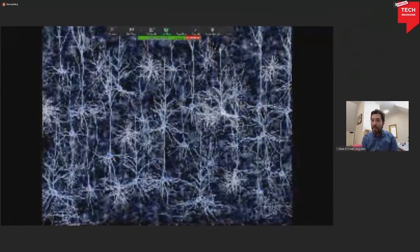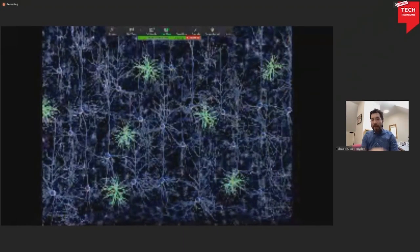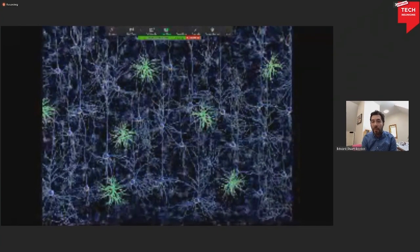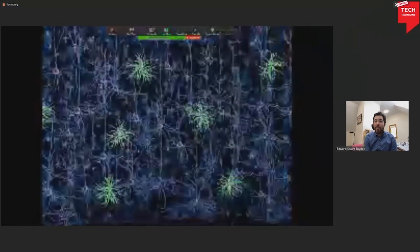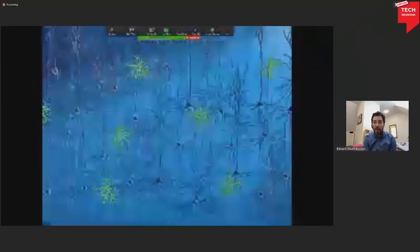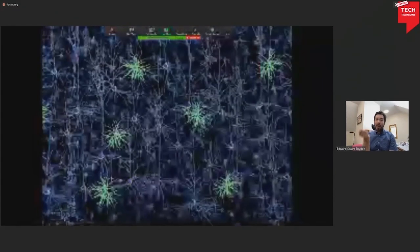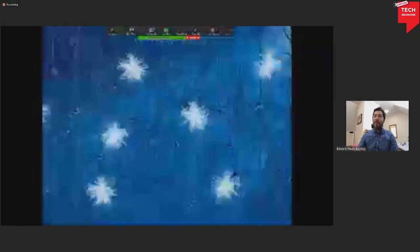So one thing we did, of course, as I mentioned, is we invent a tool, and then we deploy it to many people and help them use it. And Li-Huei Tsai's group at MIT used this tool to activate one kind of cell in the brain, these little star-shaped cells called interneurons. If you put this molecule from algae into the interneurons using a gene therapy vector that's carefully designed, then when you shine light, blue light in this case, it'll activate just those cells and not their neighbors.